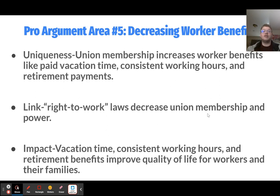The fifth pro argument is about decreasing worker benefits. Union membership makes people more likely to receive benefits like paid vacation time, consistent working hours, and retirement payments — each of which could be its own contention. People who are part of a union are more likely to receive these benefits on top of their salary. Right-to-work laws again decrease union membership and power, and the impact is that vacation time, consistent working hours, and retirement benefits improve the quality of life for workers and their families.